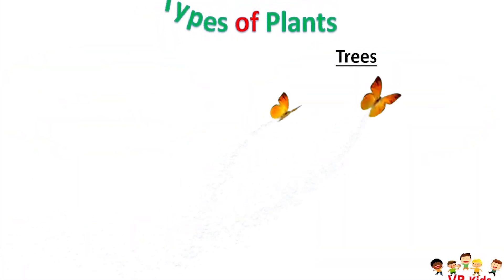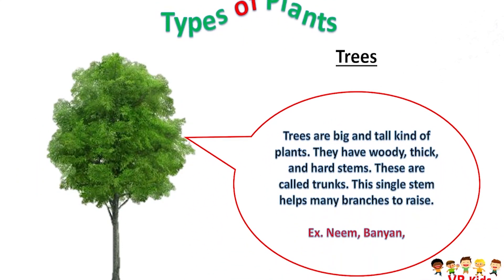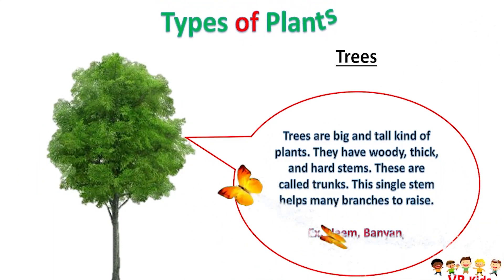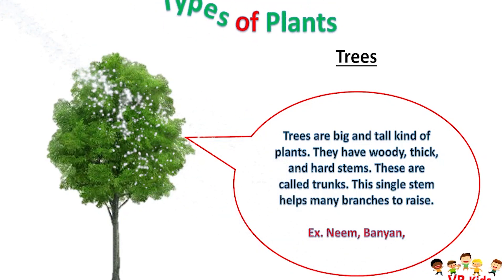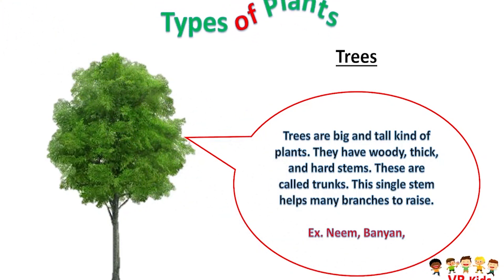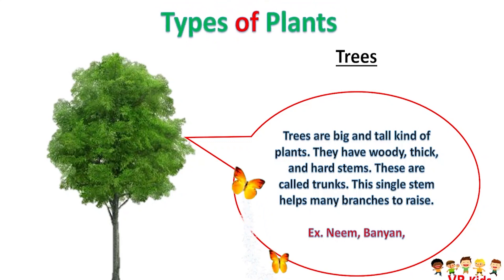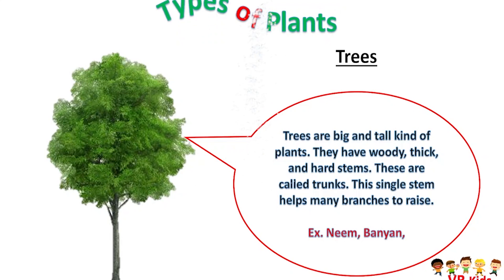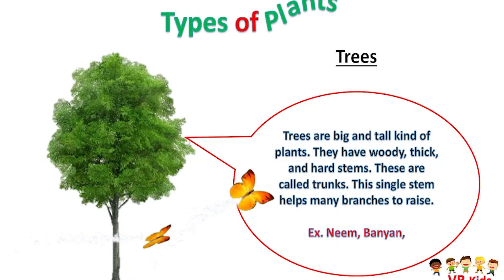Trees are big and tall kinds of plants. They have woody, thick and hard stems called trunks. This single stem helps many branches to rise. Examples: neem and banyan.